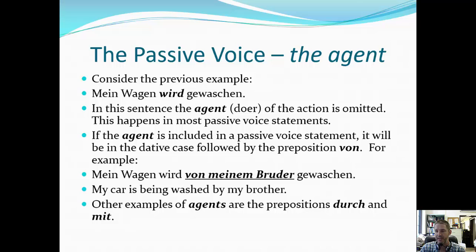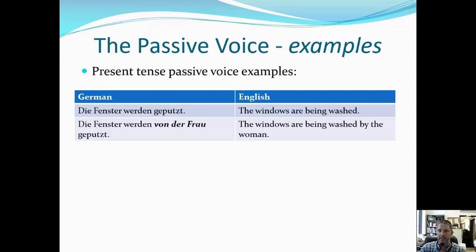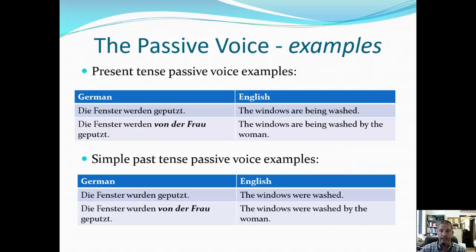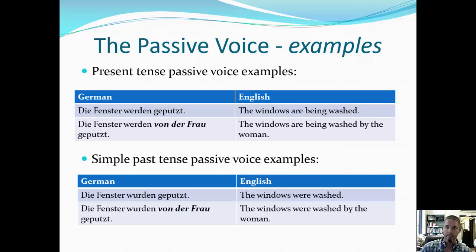There are other prepositions we can use — for instance 'durch' or 'mit' — but for now let's focus on 'von.' Looking at more examples in present tense: 'die Fenster werden geputzt' — now it's plural, so we use 'werden' instead of 'wird.' Then 'die Fenster werden von der Frau geputzt' — washed by the woman. In simple past: 'die Fenster wurden geputzt,' and 'die Fenster wurden von der Frau geputzt.' Again, we're just changing the conjugation of 'werden.' This requires your knowledge of past participle forms, which reviews the present perfect. The helping verb is now 'werden,' in either present or simple past form.